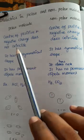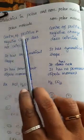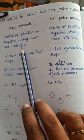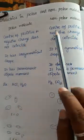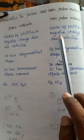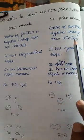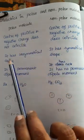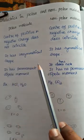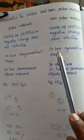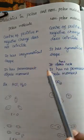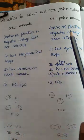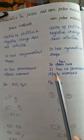In polar molecules, the center of positive and negative charges does not coincide. Whereas in non-polar molecules, the center of positive charge and negative charge does coincide — that is called non-polar molecules. Polar molecules have an unsymmetrical shape, while non-polar molecules have a symmetrical shape and a permanent dipole moment in polar molecules.